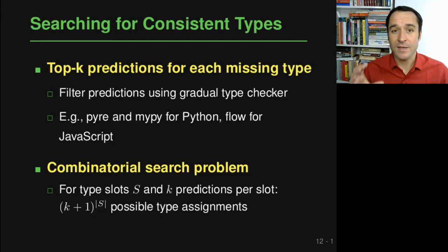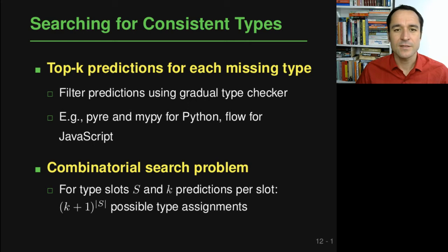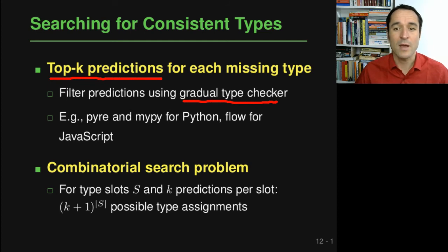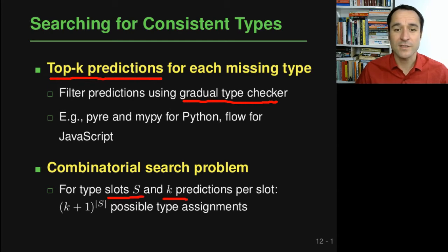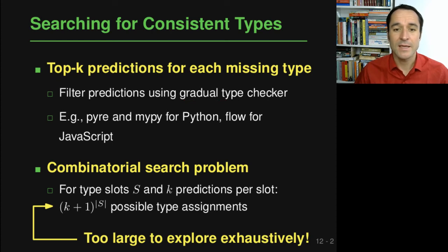The model gives a list of predictions for every code location where a type is missing. The second part of the approach searches through these predictions for a set of consistent type annotations that keep the program type-correct. The challenge is that this is a combinatorial search problem: if we have a set S of type slots and k predictions for each slot, the number of possible type assignments is exponential in the number of type slots. For large programs, exhaustive exploration is not feasible.